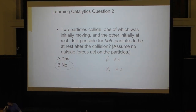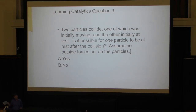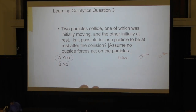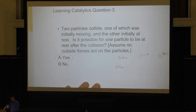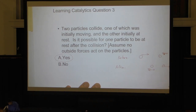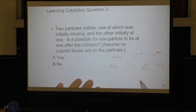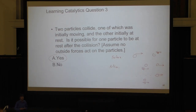Same initial situation: is it possible for one of them to be at rest after the collision? Yes. For example, in an elastic head-on collision where both objects have the same mass, the first one stops and the second one picks up all of that velocity. Another possibility is a near-miss: the moving particle goes by without truly colliding, so the stationary one stays at rest — momentum is conserved in that case as well.